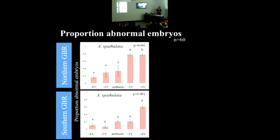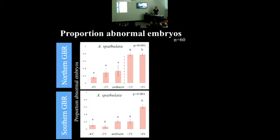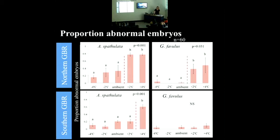For the proportion of abnormal embryos, I ran ANOVAs and the letters represent Tukey groups. For Acropora baculata, the threshold for normal development — the temperature at which the proportion of abnormal embryos was significantly increased — is somewhere between ambient and two degrees above ambient in the northern Great Barrier Reef, and between two and four degrees in the southern Great Barrier Reef. For Goniastrea favulus in the northern Great Barrier Reef, the threshold was between ambient and two degrees. In the southern Great Barrier Reef at One Tree Island, there was no effect of temperature on rates of abnormal development, and rates were quite low.